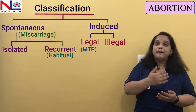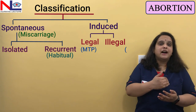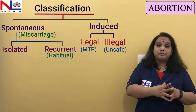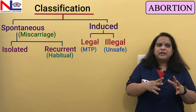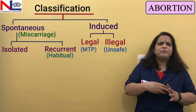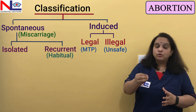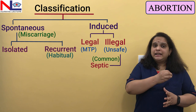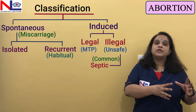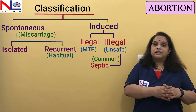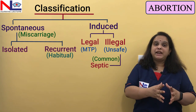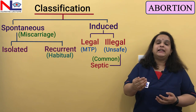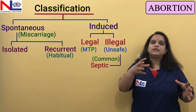Legal abortion is MTP, which is quite safe. The other variety is illegal, which is unsafe because untrained persons use unhygienic conditions to terminate pregnancy — maybe using hazardous equipment or giving blunt trauma directly to the abdomen. When such unsafe techniques are used, sepsis can occur, leading to septic abortion — any abortion accompanied by features of infection like fever, purulent vaginal discharge, and pain.